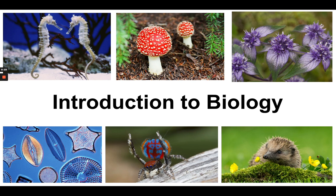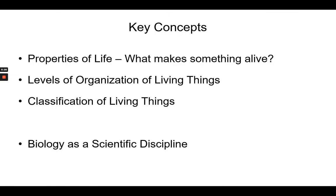The concepts we're going to discuss today are the properties of life — what makes something alive — the levels of organization of living things from atoms to biosphere, the classification of living things, how do we know that something is a plant versus a bacteria versus an animal, and finally biology as a scientific discipline, including the scientific method and the correct way to use it.